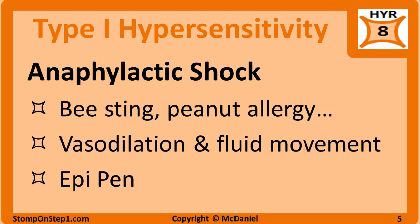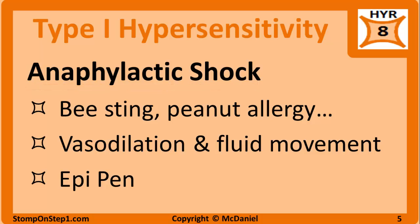Type 1 hypersensitivity is also the mechanism behind more serious allergic reactions, like reactions to peanuts or bee stings, that can lead to swelling of the lips, tongue, and throat, shortness of breath, stridor, and anaphylactic shock. Anaphylactic shock is a life-threatening condition resulting from massive releases of histamine, causing hypotension via global vasodilation and increased vascular permeability. It is treated with epinephrine, often in the form of an EpiPen outside the medical setting.